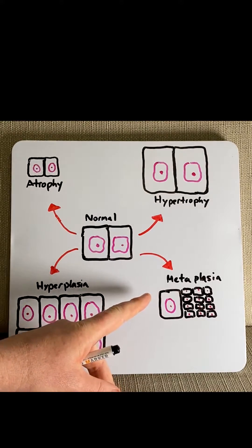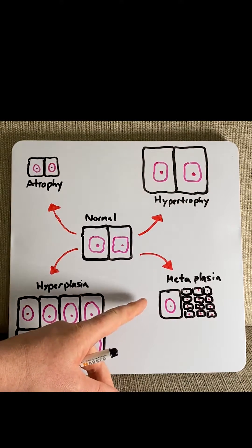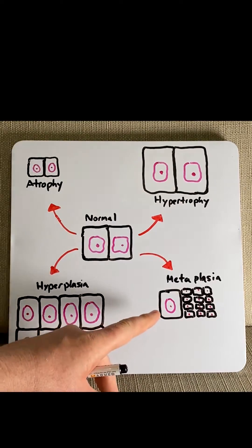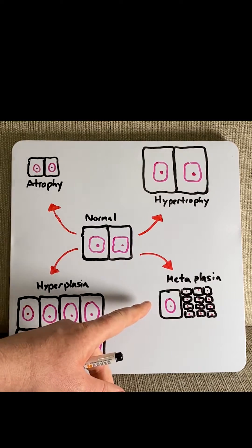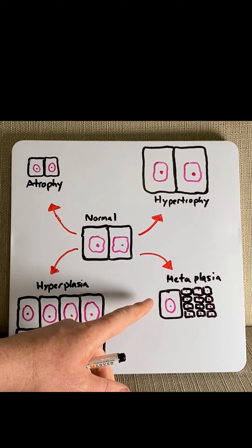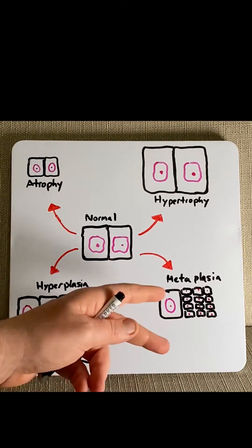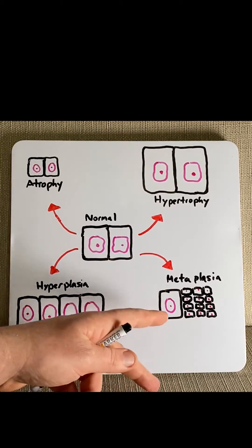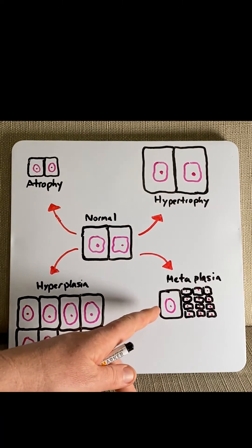Finally, metaplasia is where tissues are exposed to chronic stress or chronic inflammation over time, and the cells make a change that is more suitable to that environment. For example, cells in the trachea or bronchioles exposed to smoking will change form from a ciliated cell to a squamous cell. Or the esophagus exposed to high amounts of acid, such as in reflux, will change from a squamous cell into a columnar cell.